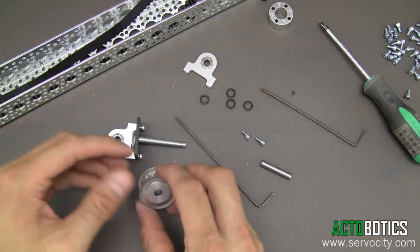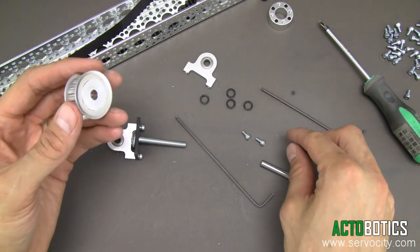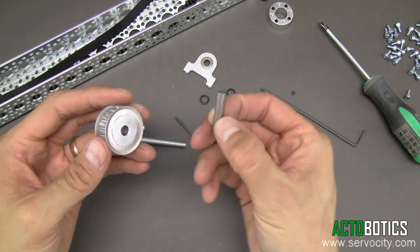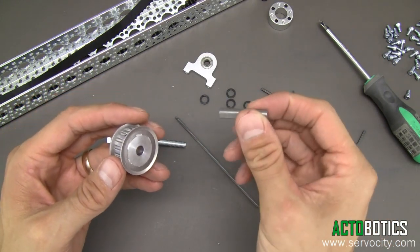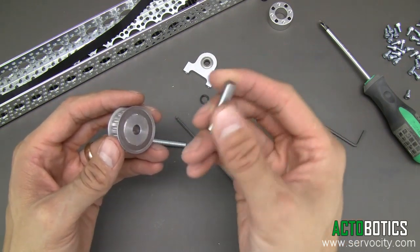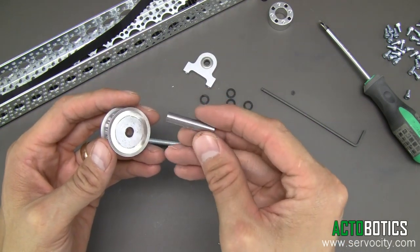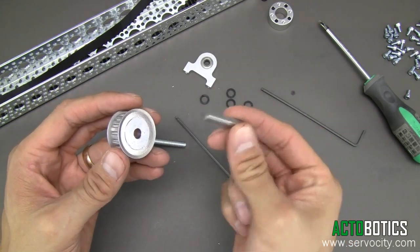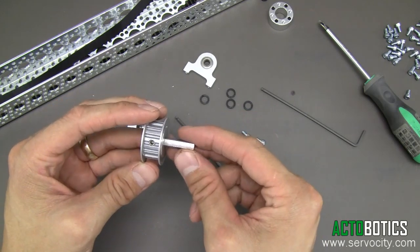Next, we're going to grab our pulley, one of the two pulleys in the kit, and the short shaft. I misspoke earlier and told you to grab the short shaft for the other section, but we actually use the short shaft for this section on the idler.